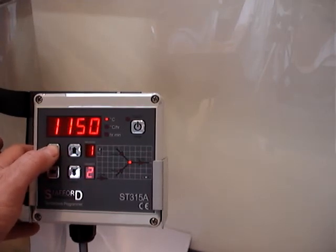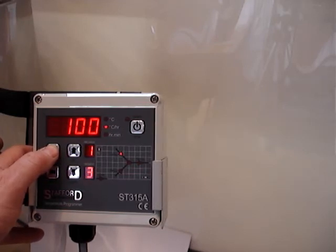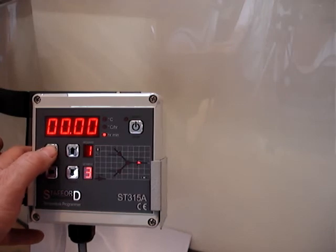250 an hour to a top temperature of 1150, with a 10-minute soak. Then a cooling ramp of 100 degrees an hour to 400, and then no soak again, and end.